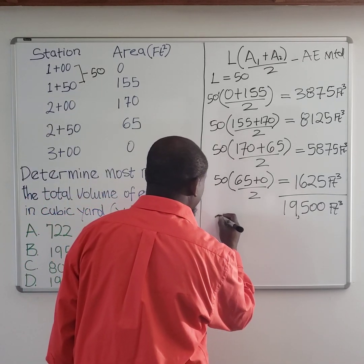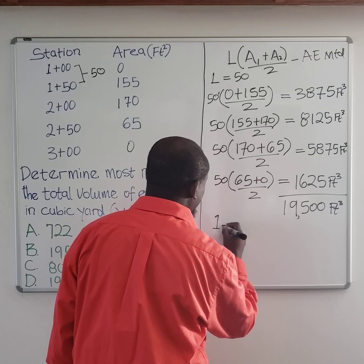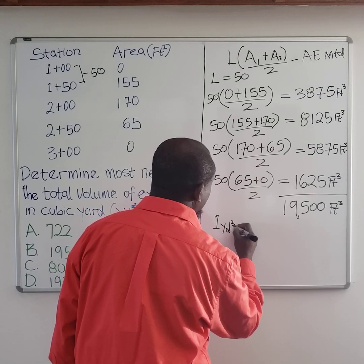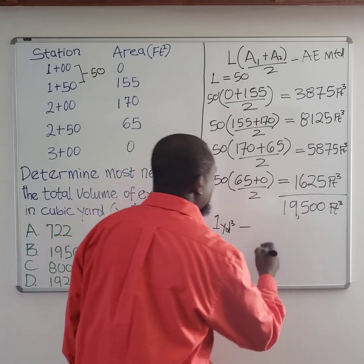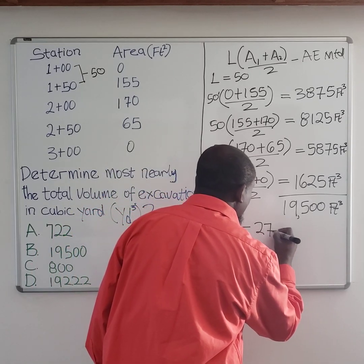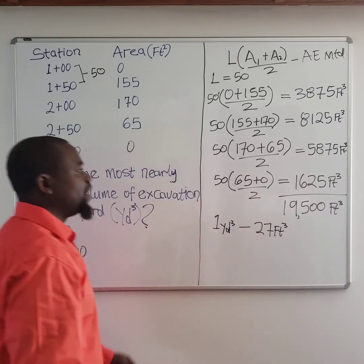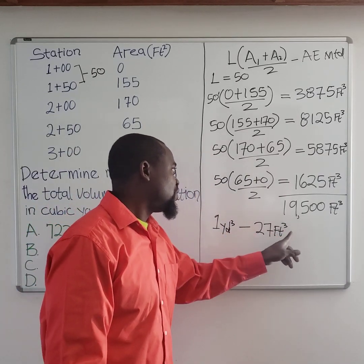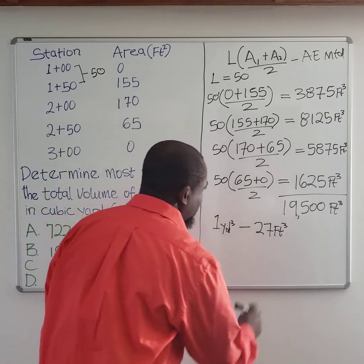You also need to calculate your volume in cubic yards. One yard is equivalent to 27 cubic feet, so you take this value and divide by 27 cubic feet.